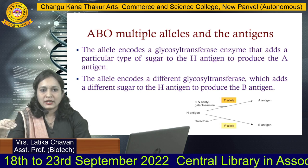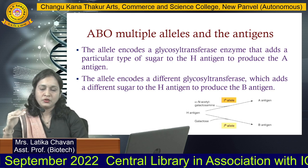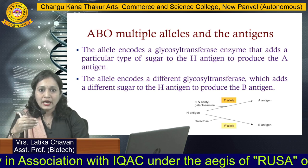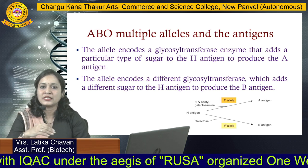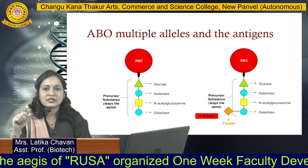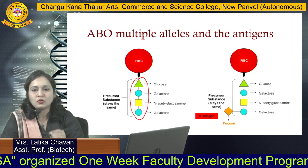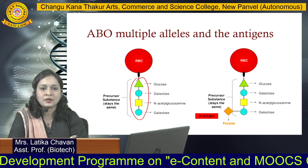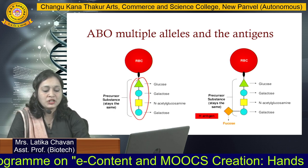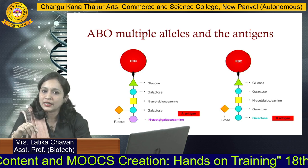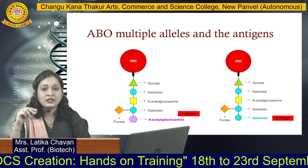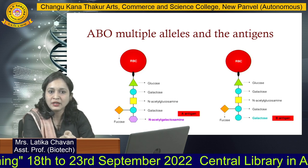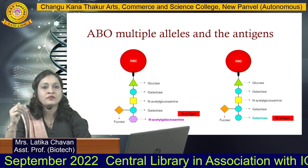The basic antigen common to all individuals is the H antigen — whether the person is A, B, AB, or O. The production of antigen A or antigen B depends on which allele is expressed in that individual. The common RBC membrane structure includes glucose, galactose, N-acetylglucosamine, and galactose sugar. Which additional sugar gets added — determined by whether IA or IB allele is present — decides whether antigen A or antigen B coats the RBC membrane.